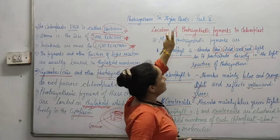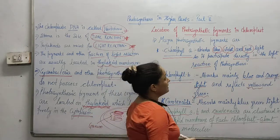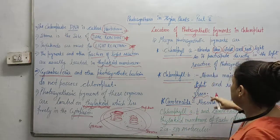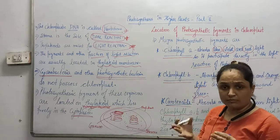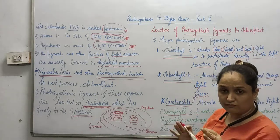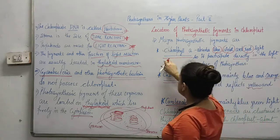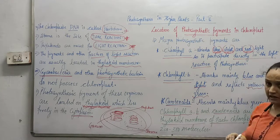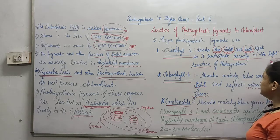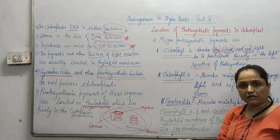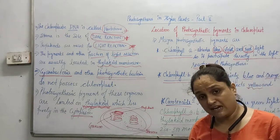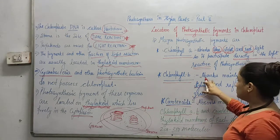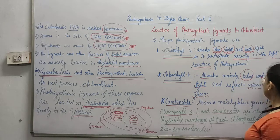Moving ahead, we are going to talk about the location of photosynthetic pigments in the chloroplast. First, let's see how many types of pigments we have. The first category is Chlorophyll A — it absorbs blue, violet, and red light, and it participates directly in the light reaction. Other pigments cannot directly participate in photosynthesis. Next is Chlorophyll B, which mainly absorbs blue and orange light.